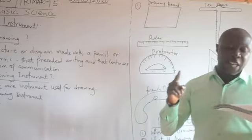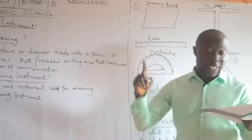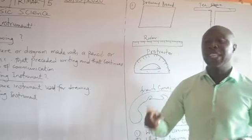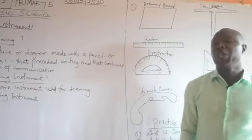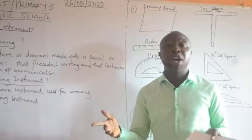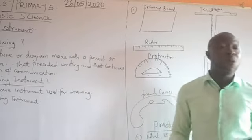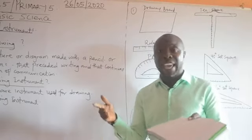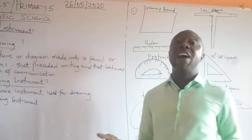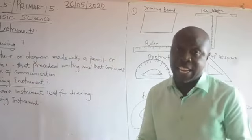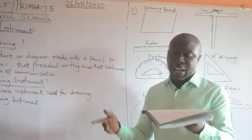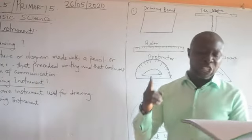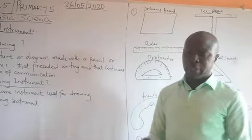Drawing paper is commonly used for technical drawing. We have different types of drawing paper: we have A1, A2, A3, and A4, depending on the work to be done.